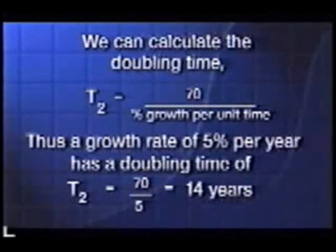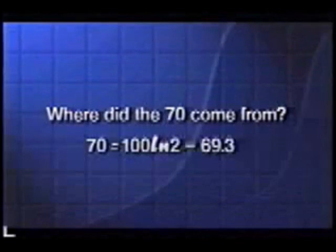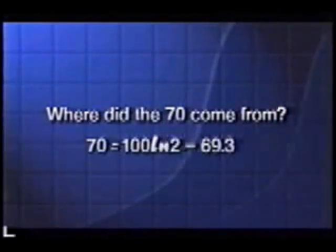So in our example of five percent per year, you divide five into 70 and find that the growing quantity will double in size every 14 years. Where did the 70 come from? The answer is it's approximately 100 multiplied by the natural logarithm of 2. If you wanted the time to triple, you'd use the natural logarithm of 3 — it's all very logical.